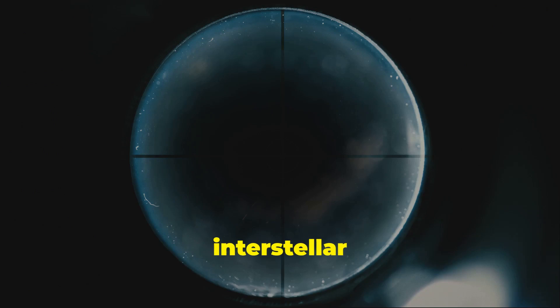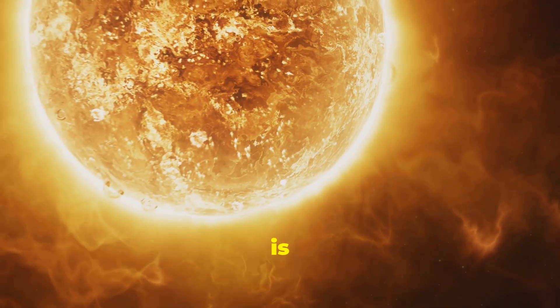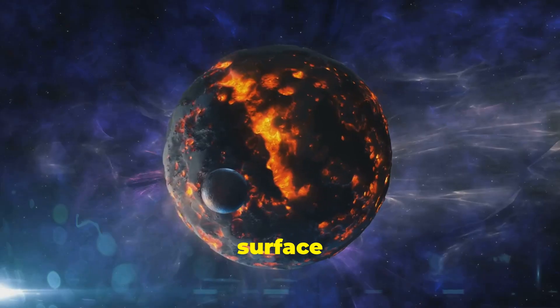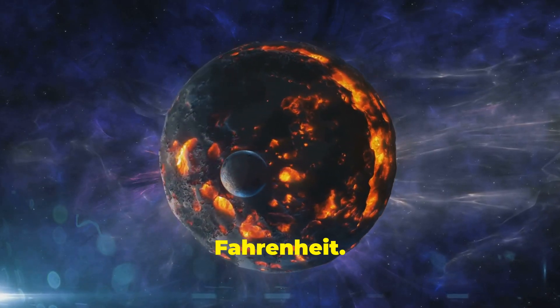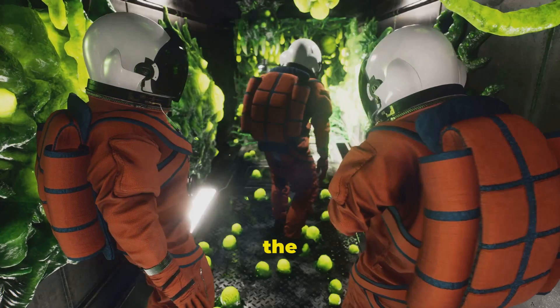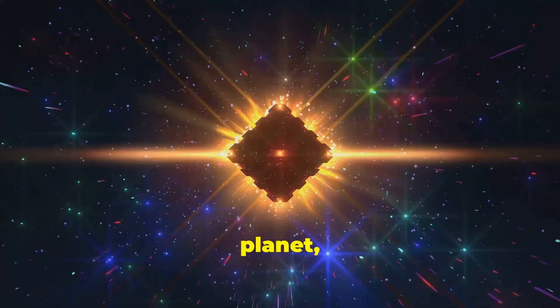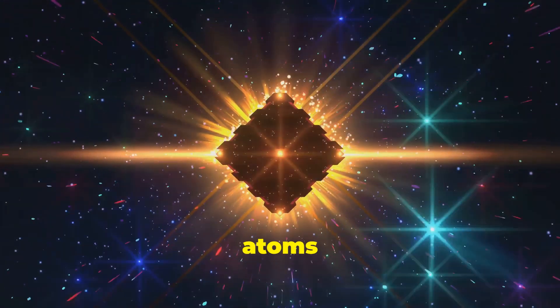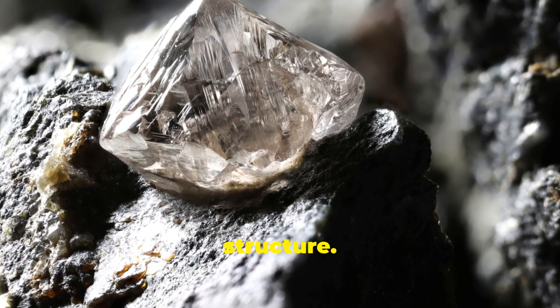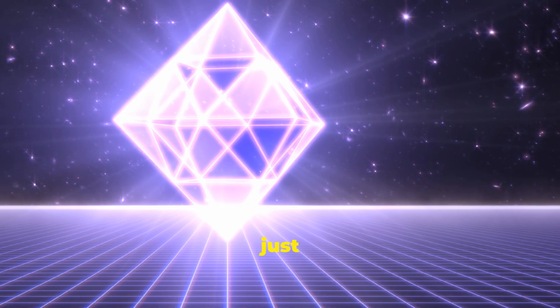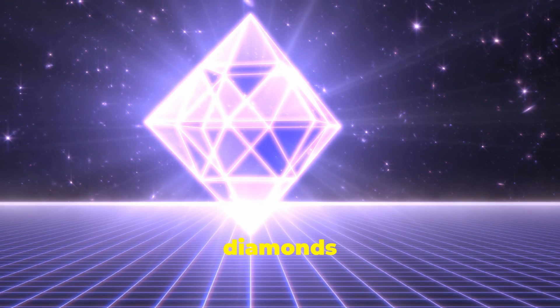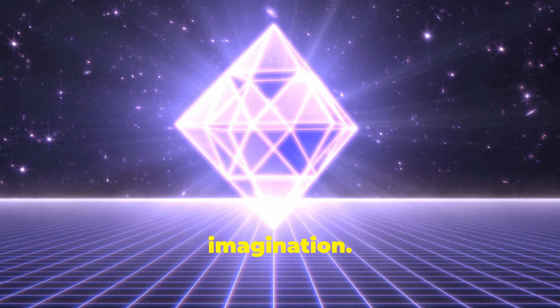Now before you start planning your interstellar diamond heist, you should know that 55 Cancri E is incredibly hot, with surface temperatures reaching a scorching 4,900 degrees Fahrenheit. This extreme heat combined with the intense pressure deep within the planet, is thought to have forced the carbon atoms to bond together, forming a massive diamond structure. While we can't exactly mine this cosmic treasure trove, just the thought of a planet made of diamonds is enough to spark anyone's imagination.